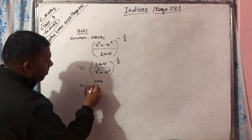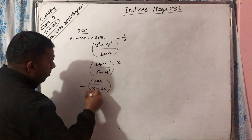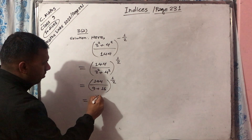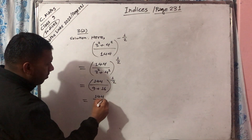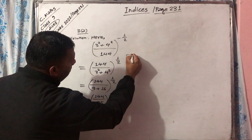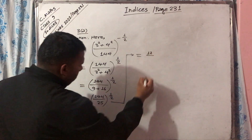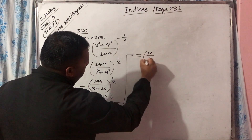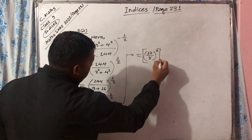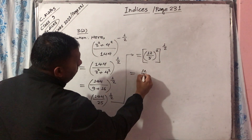So we get 144 upon 3 square plus 4 square, this whole power positive 1 by 2. Now 144 upon 3 square is 9, plus 4 square is 16, whole power 1 by 2. That gives 144 upon 25, whole power 1 by 2. Now 144 is 12 square and 25 is 5 square, so we get 12 by 5.